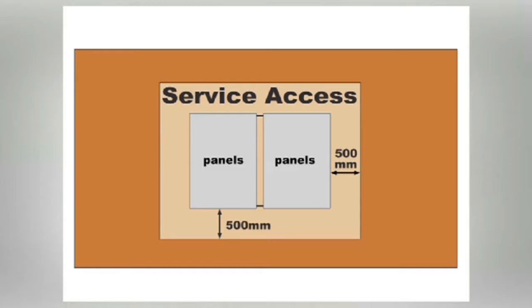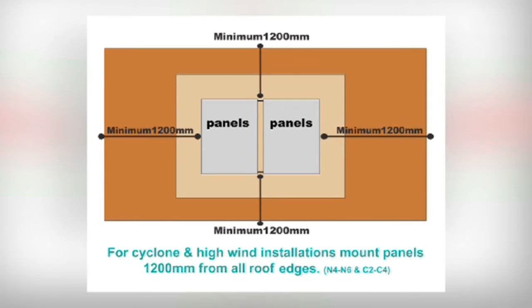This slide shows the importance of set out by leaving 500 millimeters clear around the panels to allow for service, and allowing for high wind situations by keeping the bottom of the panels 1200 millimeters from all roof edges.